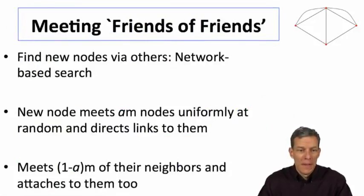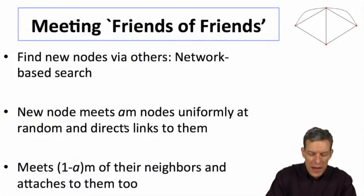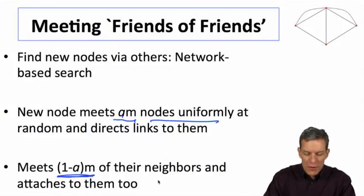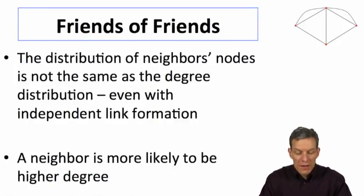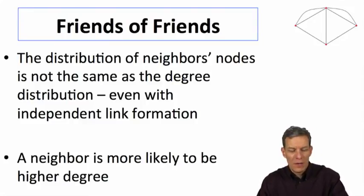Let's think about meeting friends of friends. You're forming m of your nodes uniformly at random, and then also meet one minus a times m of their neighbors and attach to those nodes too. What's important is the distribution of neighbors' nodes is not the same as the degree distribution, even with independent link formation. A neighbor is more likely to be of high degree. Let's go through the logic of that.